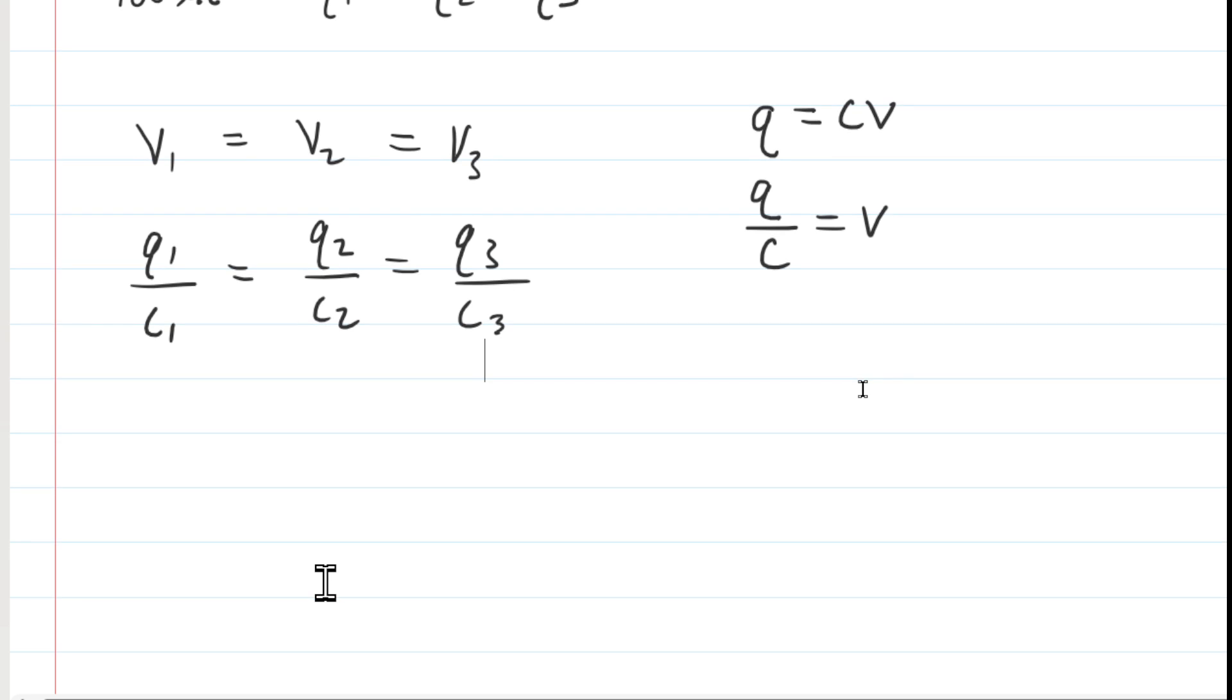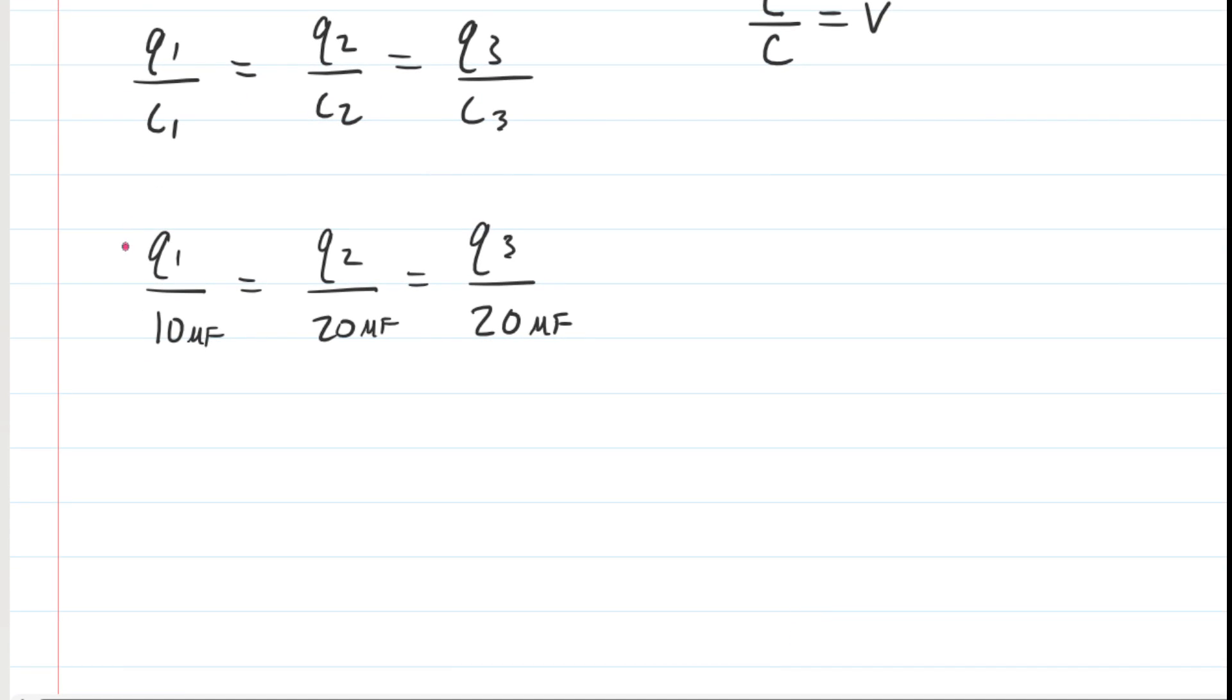Now, the capacitance values, C1 through C3, were given. So let's plug those in. And then interestingly, if we go through this equation and multiply every term by 20 microfarads, so we're just multiplying everybody by 20, these 20s will cancel, as will those.